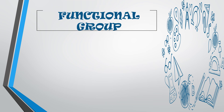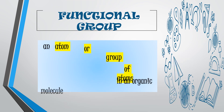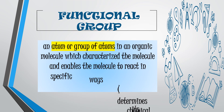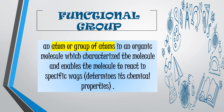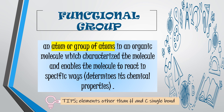What is a functional group? It is defined as an atom, group of atoms, or bonds that determine the chemical properties of organic compounds. One way to identify the functional group in a structural formula is by identifying elements other than hydrogen and carbon that are joined by a single bond.